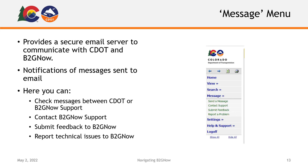Your Message menu provides a secure email server for you to communicate with CDOT and B2GNOW. Messages sent here are securely encrypted to protect your information. If you receive any messages in B2GNOW, a notification will be sent to the email address associated with your account. Here, you can check any messages between you and CDOT or B2GNOW help and support. You can also contact B2GNOW support to submit a customer support request. Remember, if you are sending requests to B2GNOW, please be sure to provide as much information about the issue you're experiencing as possible to ensure the fastest response time. You can also submit any feedback directly to B2GNOW or report any technical issues you experience.